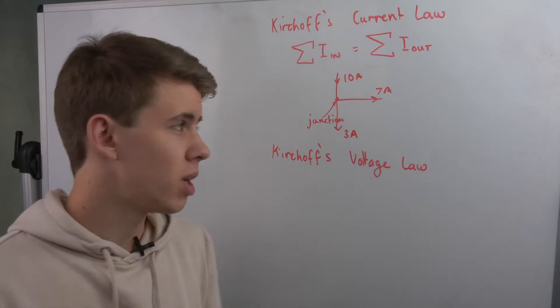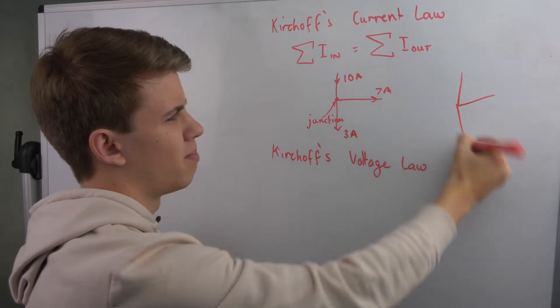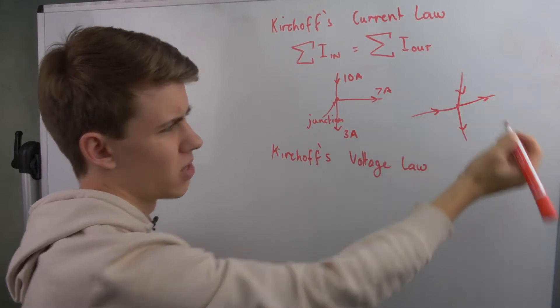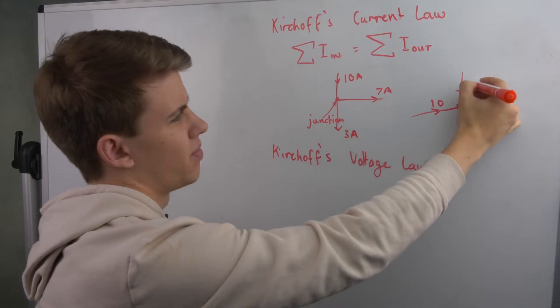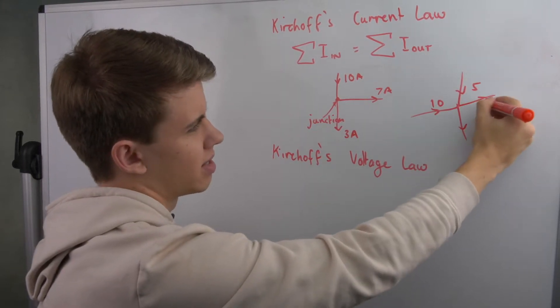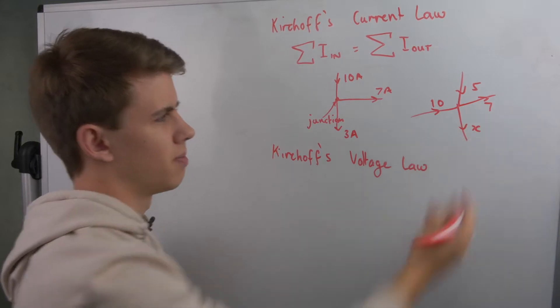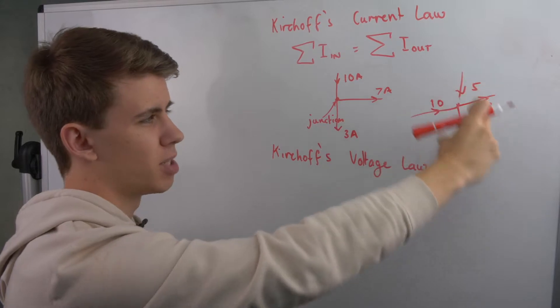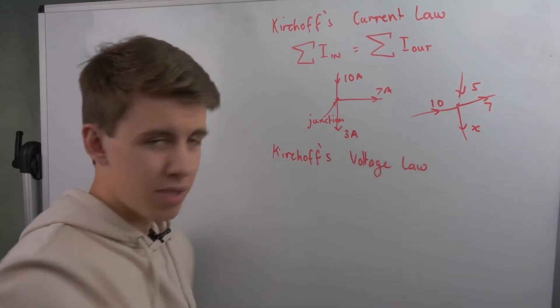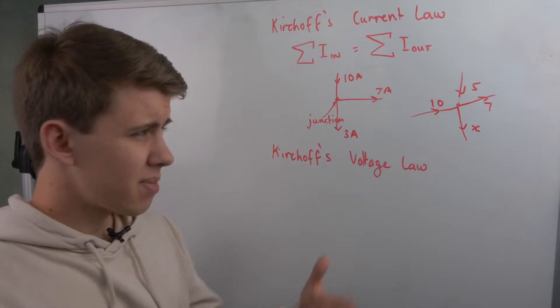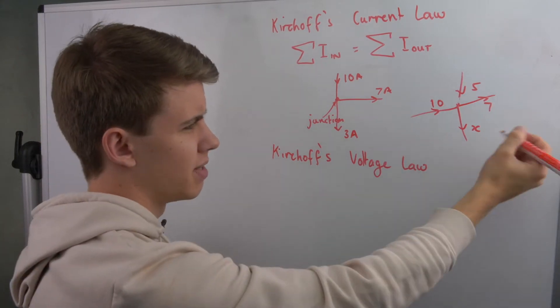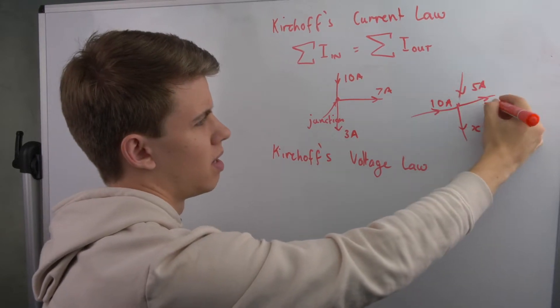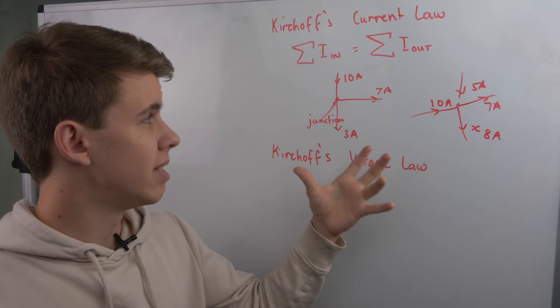They can do this in various one-mark questions. They might give you a multitude of arrows and say this is coming in, this is going out, they might say this is 10, this is 5, this is 7, what's this last one? You just have to say that all the ones going in, 10 and 5, so 15, must equal 7 plus something to give you 15. We know 7 plus 8 is 15, so that has to be 8 amps. That's Kirchhoff's current law, and this is basically a conservation of charge.